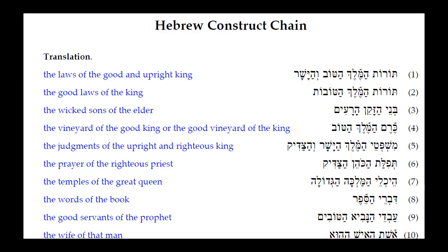The first one we're going to start here is Torot HaMelek HaTov B'ha Yashar. We have Torot, where the Oat ending is telling us this is a feminine plural absolute or construct noun. When you have two nouns side by side without anything separating them, that is a very strong sign that you have a construct chain.